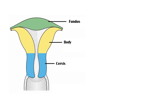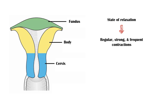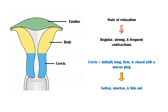During labor, the uterus changes its nature from a state of relaxation to an active state of regular, strong, and frequent contractions to facilitate the passage of the fetus through the birth canal. In addition, the cervix, which was initially long, firm, and closed with a protective mucus plug, will soften, shorten, and thin out for labor to progress.